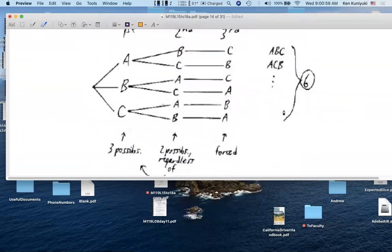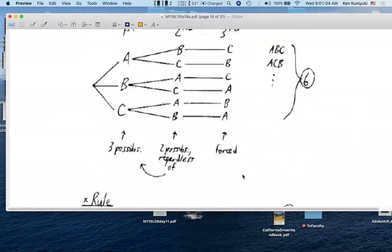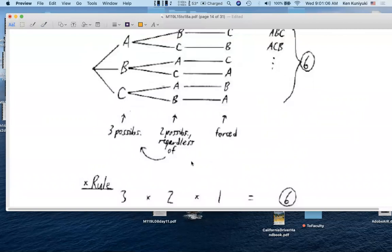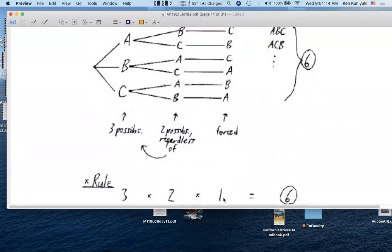Well, again, there were three possibilities for first place or gold. There were two possibilities for second place or silver. And there was one possibility for bronze, once we knew the first two. So, three times two times one is six.